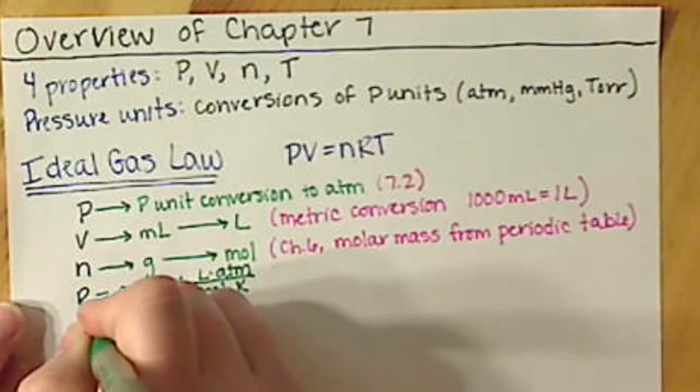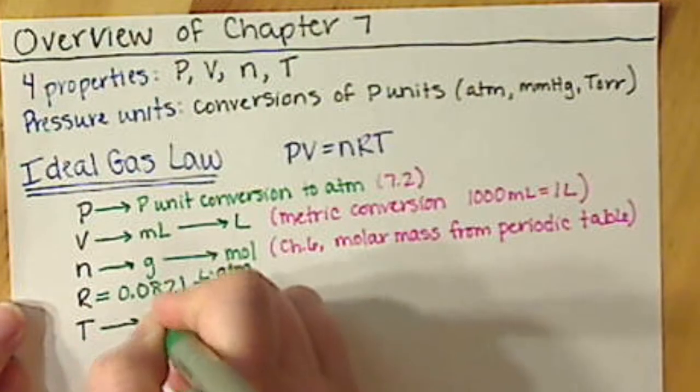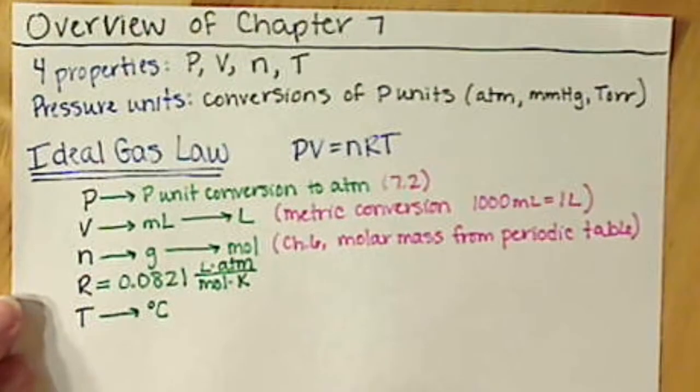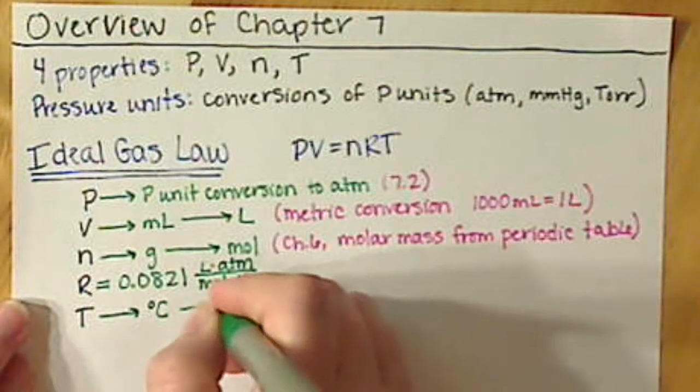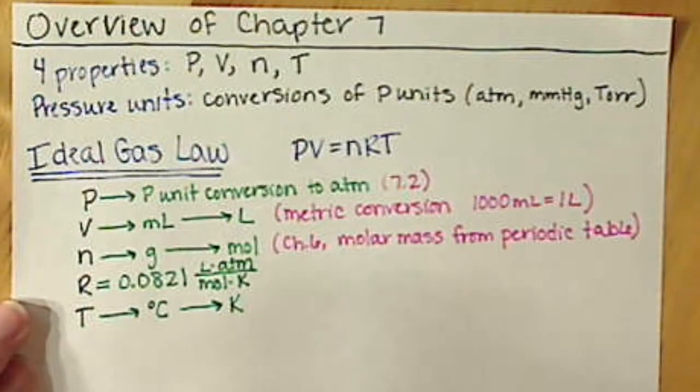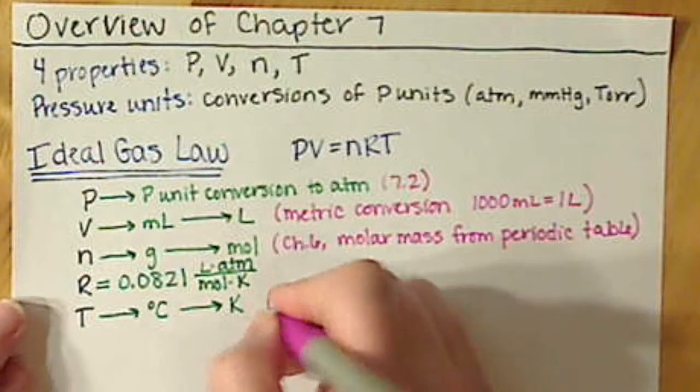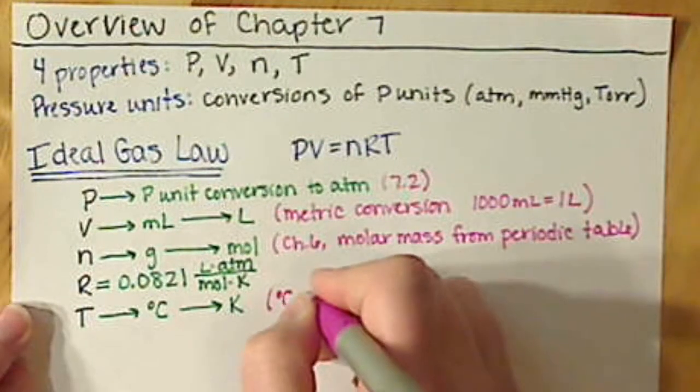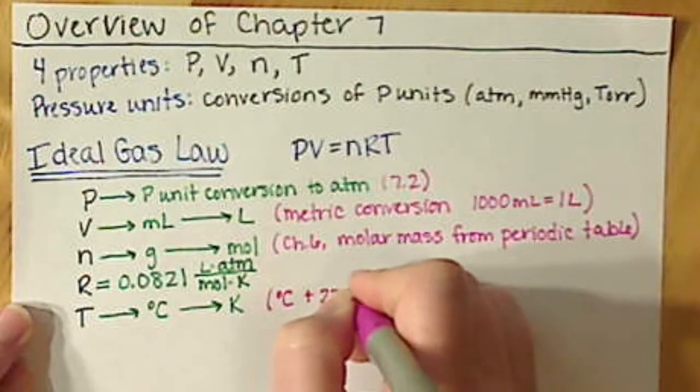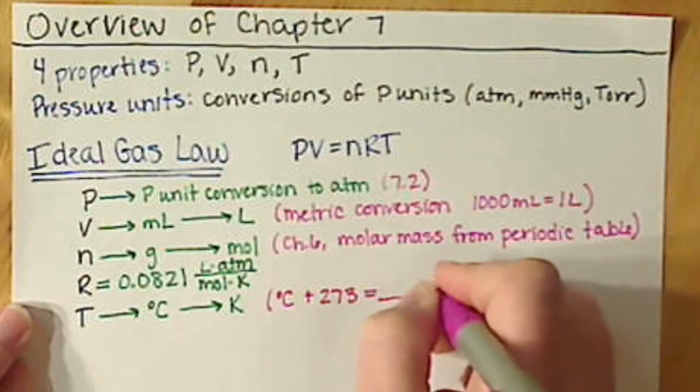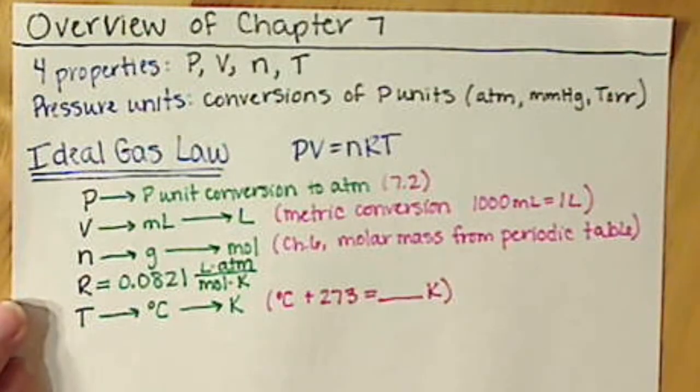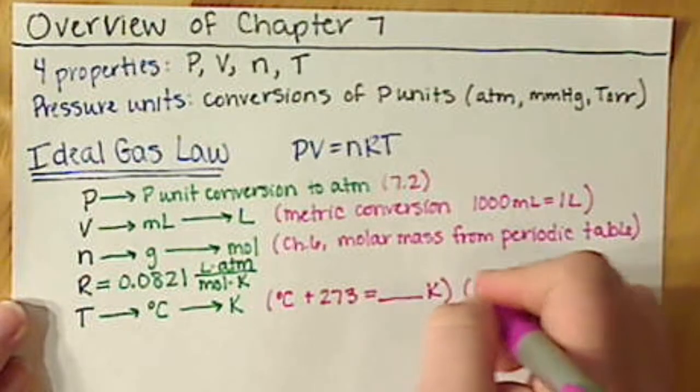Our temperature: temperature is almost always going to be given to you in degrees Celsius and you're going to want to convert that to Kelvin. Basically you are going to take your degrees Celsius plus 273 to get your Kelvin, and that's from Chapter 2.